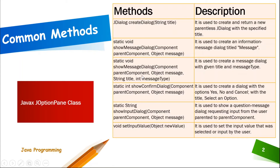This second showMessageDialog is used to create a message dialogue with a given title and message type. This is commonly used rather than the first one because it allows extending the display of output with another string value. Static int showConfirmDialog takes component parent and object message — it is used to create a dialogue with yes, no, and cancel options with the title 'select an option'.